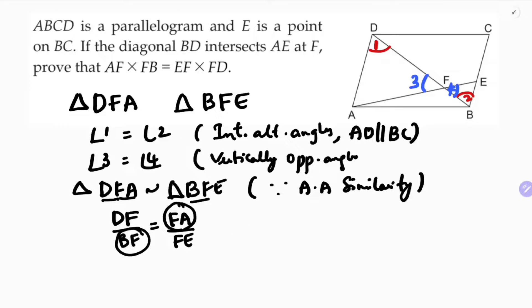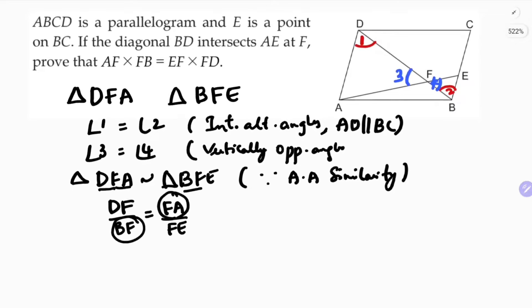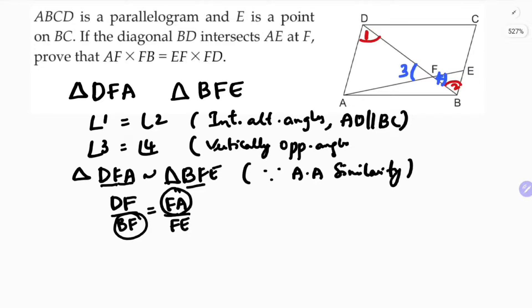So now if you will cross multiply, you will get DF into FE equals FA into BF. See this is the required proof, but if you want you can write in order.